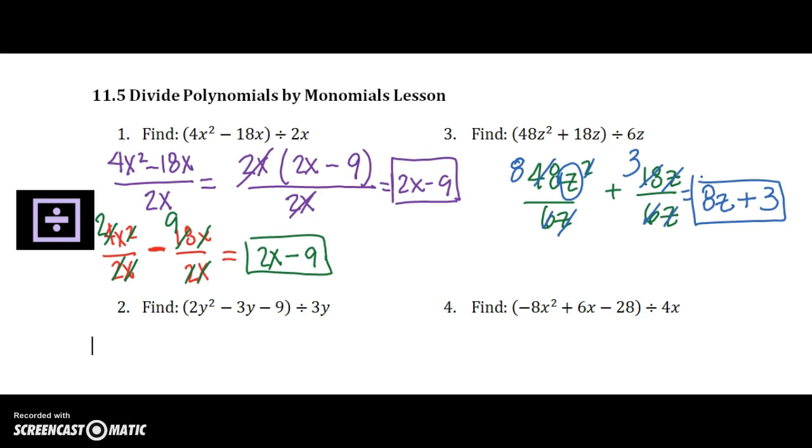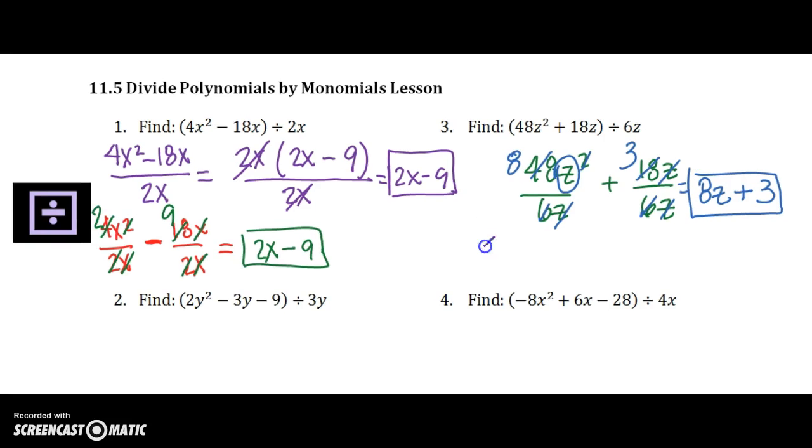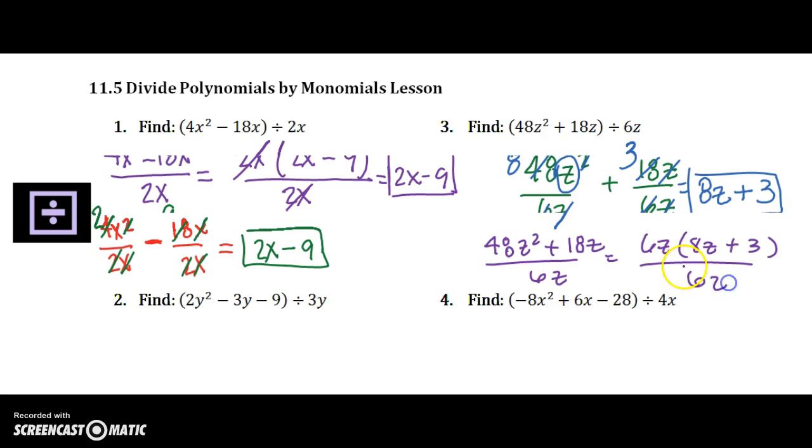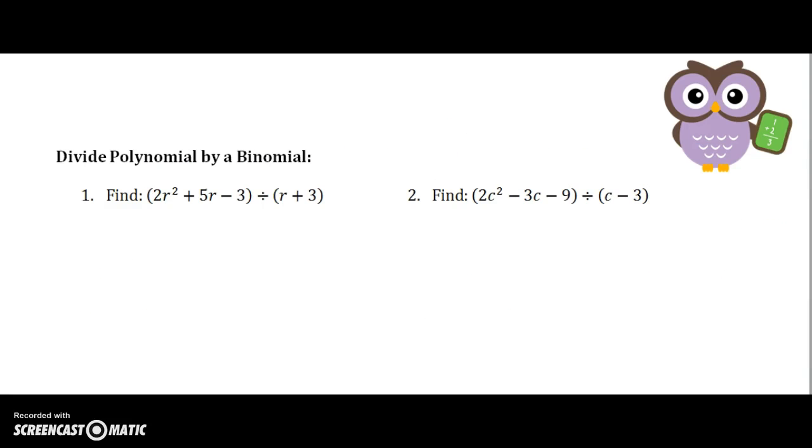So if you did it the way we've been doing it, we would have had to factor out 6z, and that leaves us with 8z plus 3 over 6z. And these would cancel and we'd end up with the same answer. I'm going to leave 2 and 4 for you to practice on your own. The obvious next step in this progression is to divide a polynomial by a binomial.